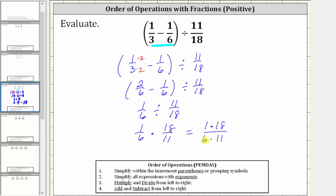Notice 18 and 6 share a common factor of 6. The 18 simplifies to 3 because there are 3 6s in 18, or because 18 divided by 6 is 3. And the 6 simplifies to 1 because there is 1 6 in 6, or because 6 divided by 6 is 1.